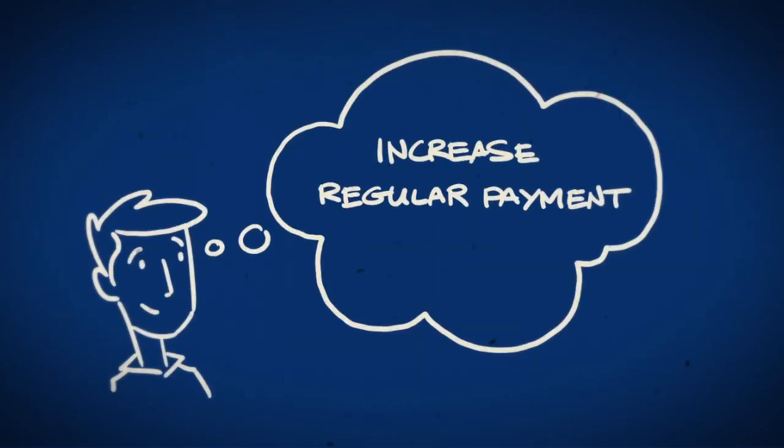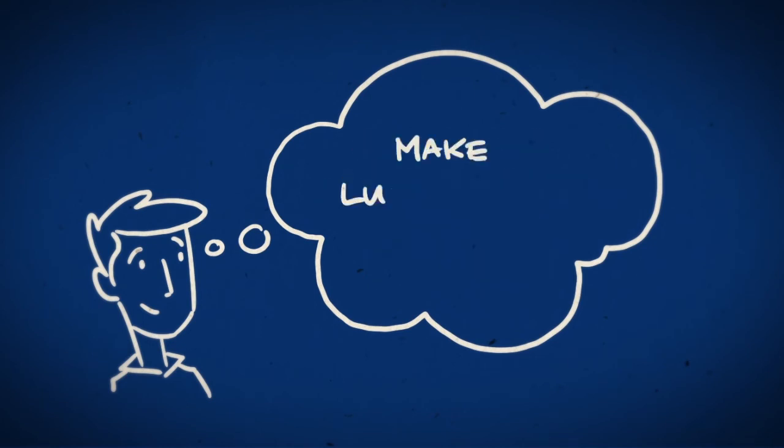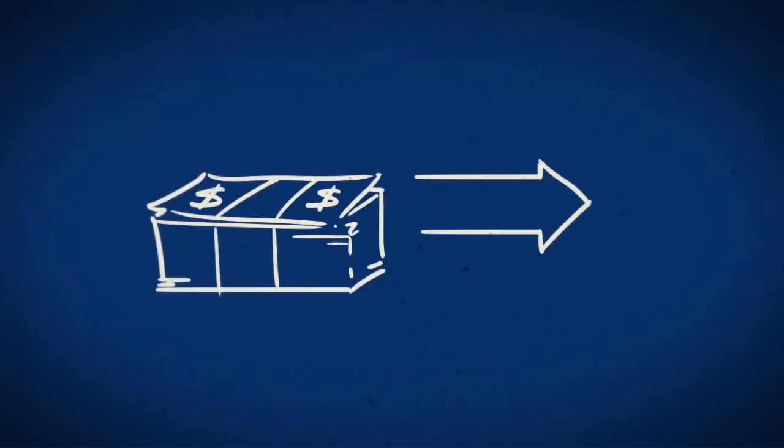A few options to consider are increasing your regular payment amount, choosing an accelerated payment frequency, or making annual lump sum payments. All of the extra funds will go towards reducing your principal, so you'll be mortgage-free faster.